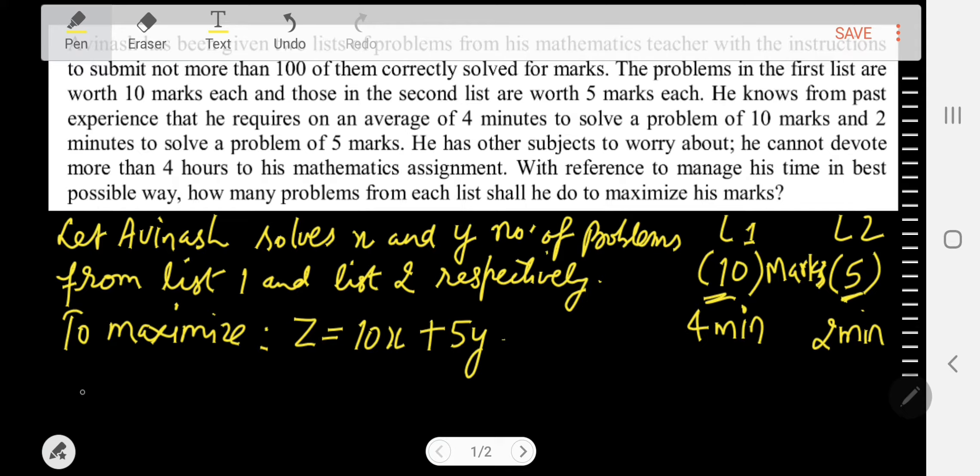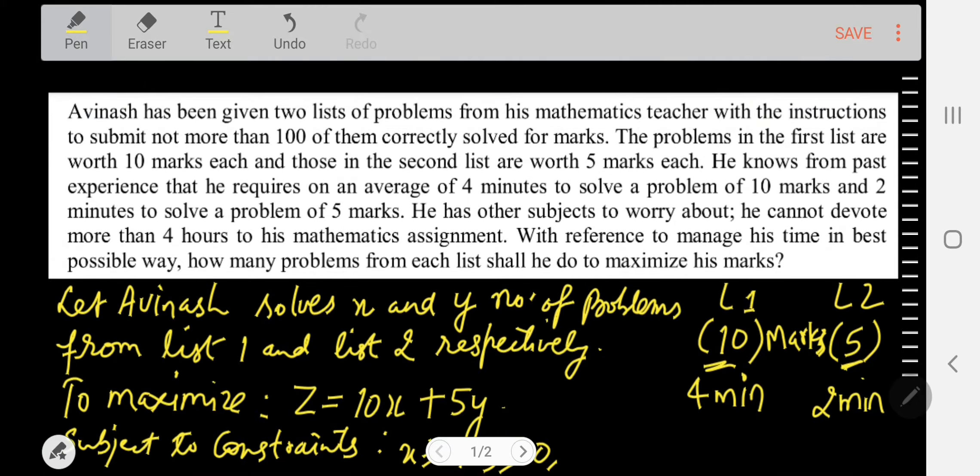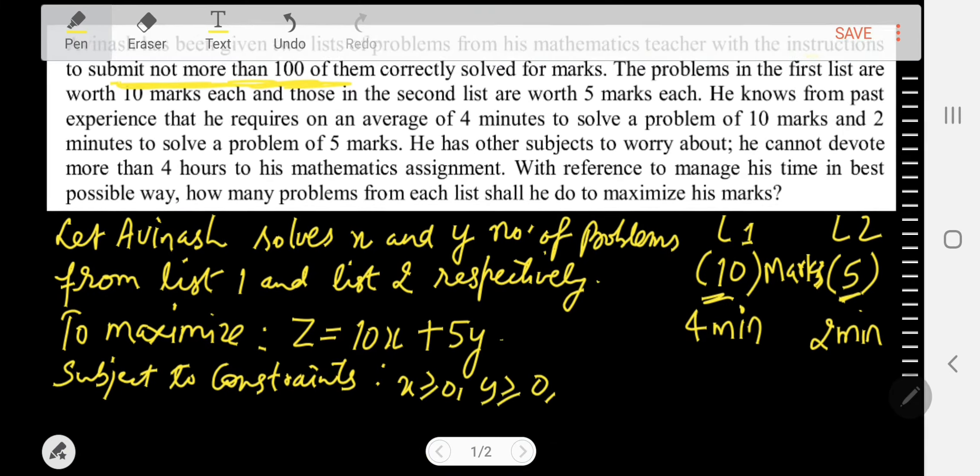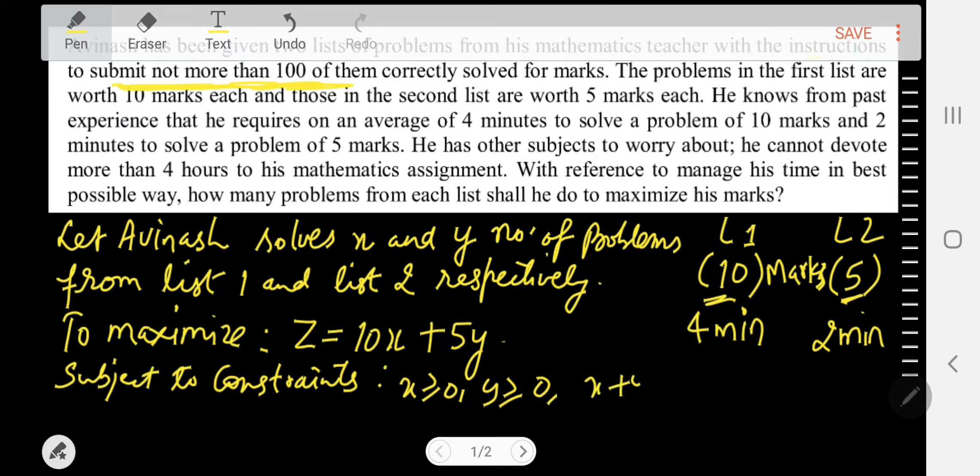Subject to constraints: of course the number of problems that he will solve won't be negative, so we will write this constraint x, y ≥ 0. Then we were given this information that he has to submit not more than 100 of them correctly solved for marks, means x + y must be less than or equal to 100.